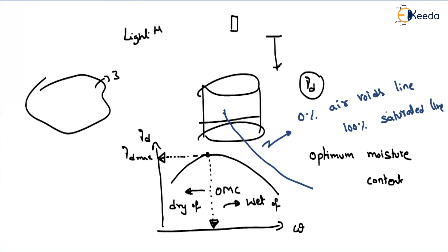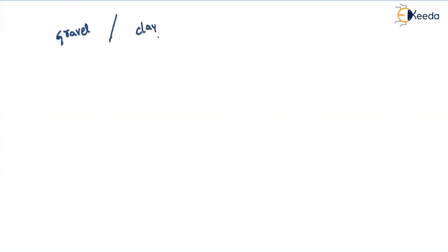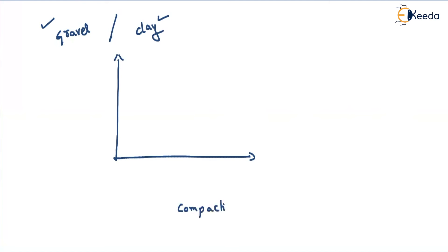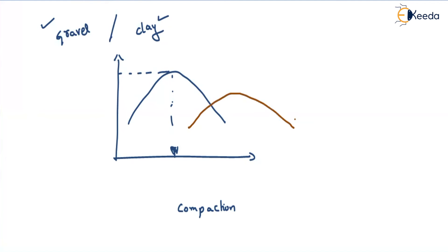If we take two different types of soil — say gravel and clay — and plot their compaction curves, we get different shapes. The curve for gravel soil will show a higher gamma_d max, while the curve for clay soil will be flatter and shifted to the right. This plot is called the compaction curve. The maximum dry density for gravel is greater than for clay, while the optimum moisture content for clay is greater than for gravel.